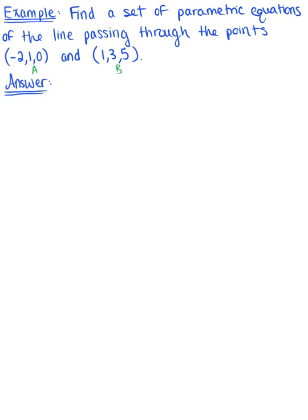Alright, so the goal here is to find the parametric equations or a set of parametric equations of a line. So we are looking for some x of t is equal to x naught plus a t. We need y of t is equal to y naught plus b t.